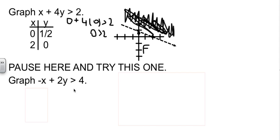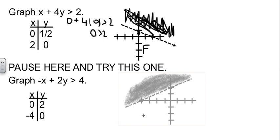So we're graphing negative x plus 2y is greater than 4. Hopefully, when you did your intercepts, if that's the method you chose, you got the points 0, 2, and negative 4, 0. So when you plotted those, you got a dotted line, because it was not equal.